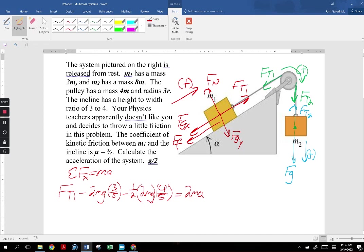And that is going to cause the 2M mass to accelerate. We can clean this up a little bit. I'm going to isolate FT1 here. That 2 goes away. So we've got 4 fifths and 6 fifths, I believe is 10 fifths, and 10 fifths is 2. So we have FT1 equals 2MG plus 2MA.